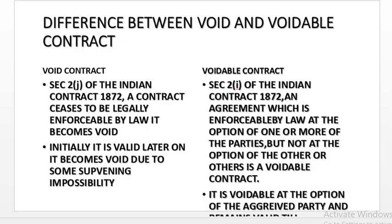What is the difference between void contract and voidable contract? Section 2J of the Indian Contract Act 1872 — a contract ceases to be legally enforceable by law, it becomes void. Initially it is valid, but later on it becomes void due to some supervening impossibility. Voidable contract is dealt under Section 2I of the Indian Contract Act. An agreement which is enforceable by law at the option of one or more of the parties, but not at the option of the other, is a voidable contract. It is voidable at the option of the party whose consent is not free.